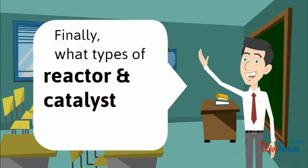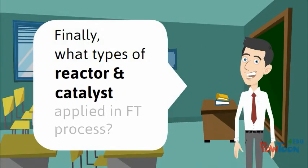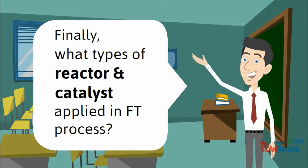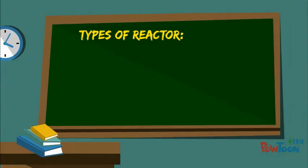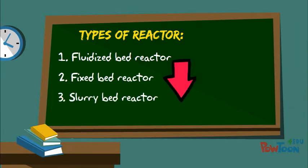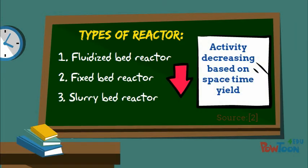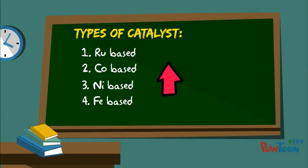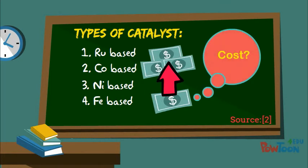Finally, what types of reactor and catalyst are applied in the Fischer-Tropsch process? Types of reactor: 1. Fluidized bed reactor, 2. Fixed bed reactor, 3. Slurry bed reactor. The activity of these reactors decreases based on space-time yield. The types of catalyst increase from iron (Fe) to ruthenium (Ru) in terms of cost.